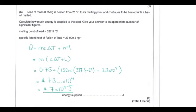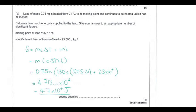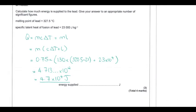Lead of mass 0.75 kg is heated from 21 degrees to its melting point of 327.5 degrees, then heated further until completely melted. We need to supply energy both to raise the temperature and to change the phase. Factorising out the mass, the temperature change is from 21 to 327.5 degrees and we add the specific latent heat of fusion. The total energy is 4.7 times 10 to the 4 joules, to two significant figures.